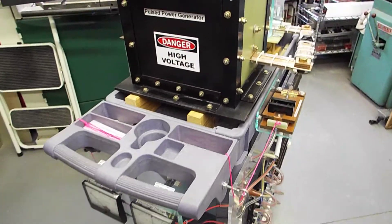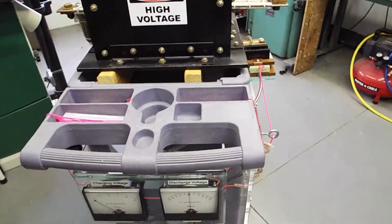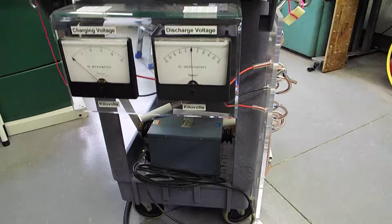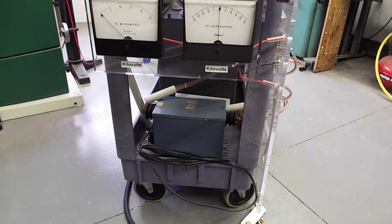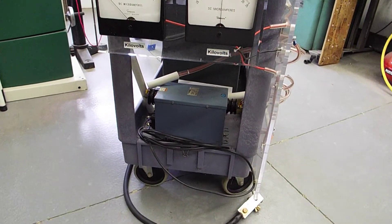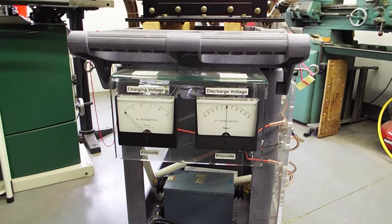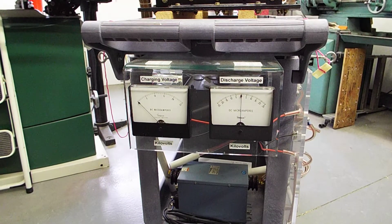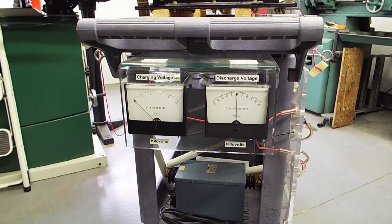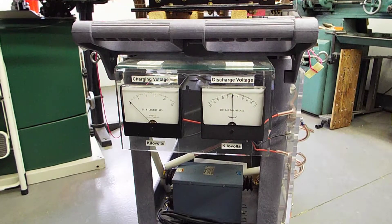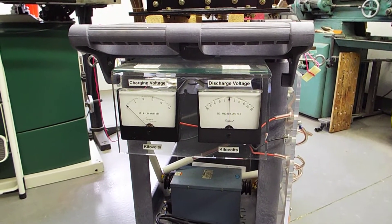And the capacitor is charged by a neon sine transformer, which you can see down here, the blue box, 15,000 volts. And to measure the charge, there's actually 2 meters. One is for input charge and the other one is to measure the charge when you're discharging it after you're done.